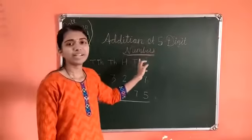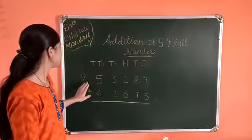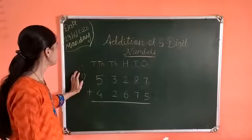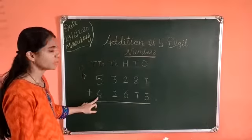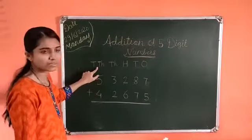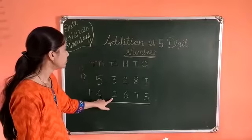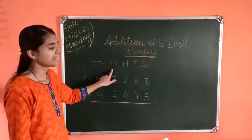It is addition of 5 digit numbers. So this is an example of addition. 5 and 4 is on 10,000th place. 3 and 2 is on 1,000th place.